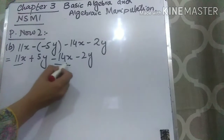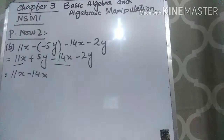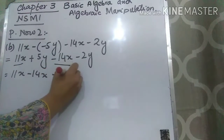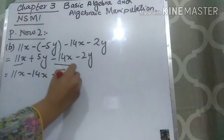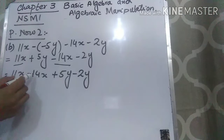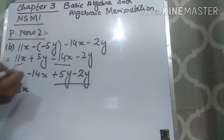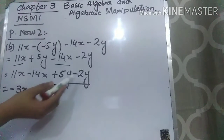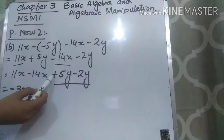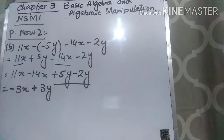Now write the like terms together. The X terms are 11x and 14x — write them together: 11x minus 14x. The Y terms are 5y and 2y — write them together: plus 5y minus 2y. Now solve: plus and minus gives minus, so subtract 11 from 14 to get 3, and write the sign of the bigger number which is minus: minus 3x. For Y: plus minus is minus, subtract 2 from 5 to get 3y, and the sign of the bigger number is plus: so plus 3y. The answer is minus 3x plus 3y.